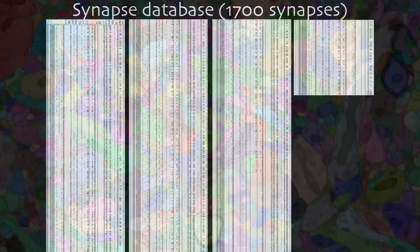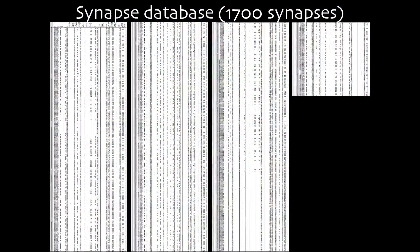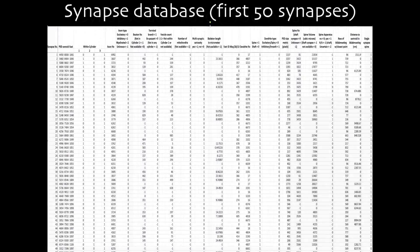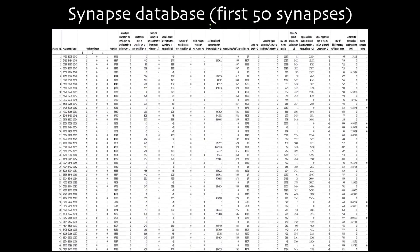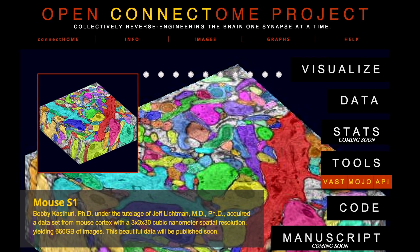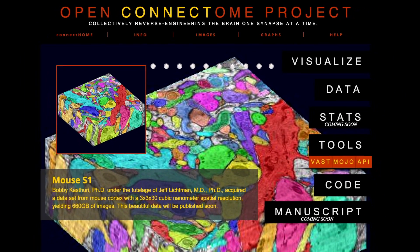Just segmenting the data is not sufficient, we also have to put it in a form that is mineable. We generated a database of 1400 synapses which is accessible online through our collaboration with the Johns Hopkins Open Connectome project run by Randall Burns, Joshua Vogelstein and others.